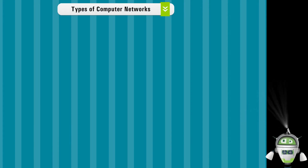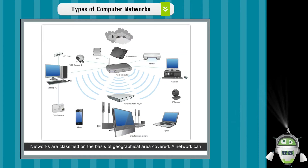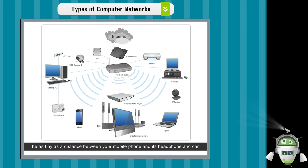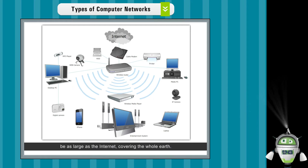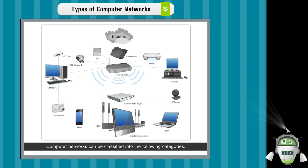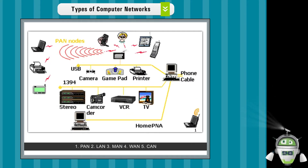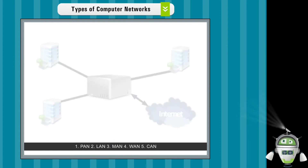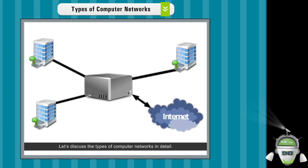Types of Computer Networks. Networks are classified on the basis of geographical area covered. A network can be as tiny as the distance between your mobile phone and its headphone, and can be as large as the internet covering the whole earth. Computer networks can be classified into the following categories: PAN, LAN, MAN, WAN, and CAN. Let's discuss the types of computer networks in detail.